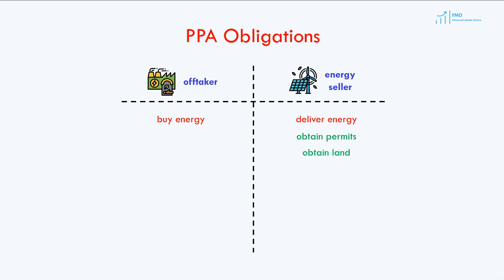Sometimes, this obligation related to permits and land can be shared with the off-taker, especially in emerging markets, where the off-taker is usually a government-owned entity. The energy seller is also responsible for arranging financing, construction, and operation of the project, including the construction of interconnection facilities.